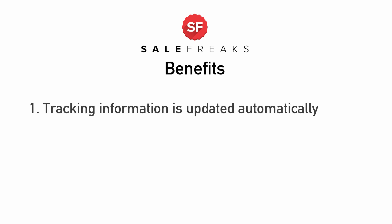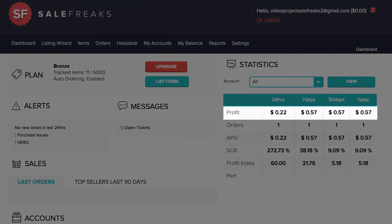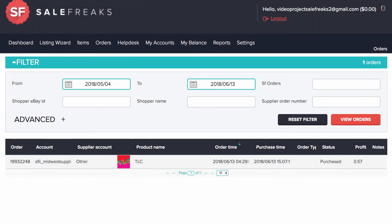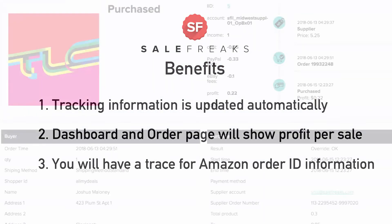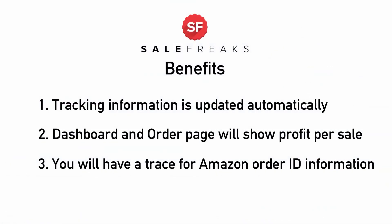The benefits of inserting this information are the following. You get to have your tracking information updated automatically once Amazon sends your email the tracking ID, and our system will take care of it. You can see how much profit you generated per sale for accurate reporting information on the dashboard page and on the order page. You have a trace for the Amazon order ID info if you need to provide customer support action. Those actions and the benefits coming from them can help significantly, not only helping you run your dropshipping business more efficiently, but keeping everything organized for you in one place. Use these tools to your advantage.